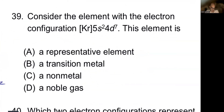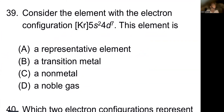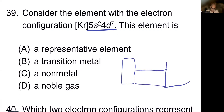Consider the element with an electron configuration ending in 5S and 4D. Since it's in the D block, we need 10 electrons. Taking a look at the periodic table: we have traveled through the S block and into the D block. The last D block entry is D10. We are stuck somewhere in the middle of the transition metals.